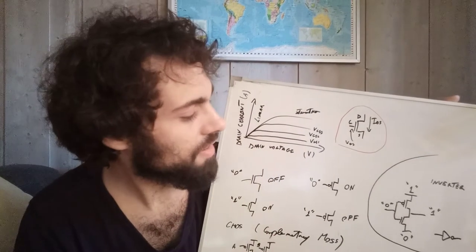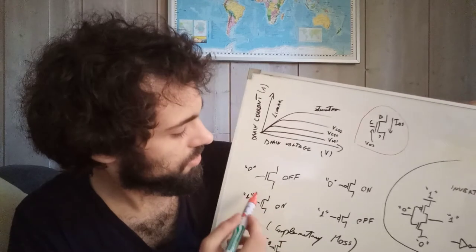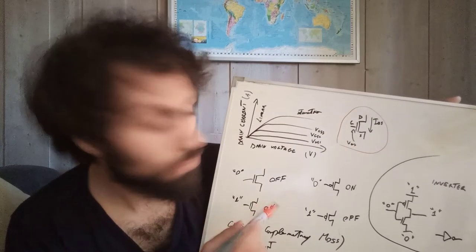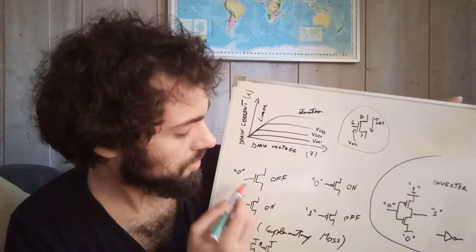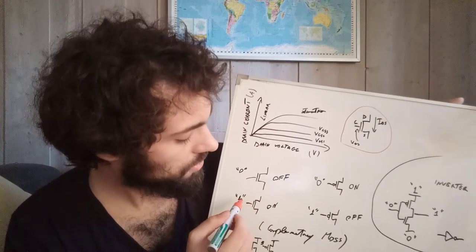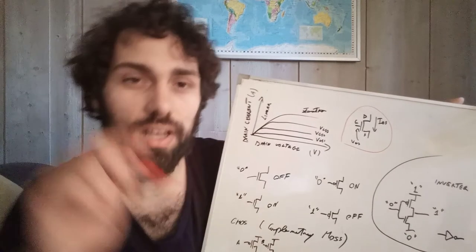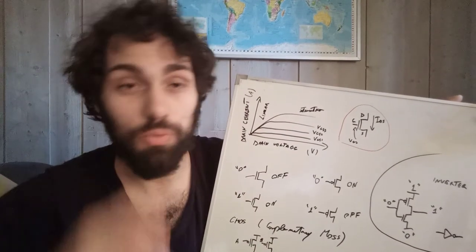For us a transistor - we have two types of transistors: NMOS transistor and PMOS transistor. NMOS is on when it receives a logic one at the input.